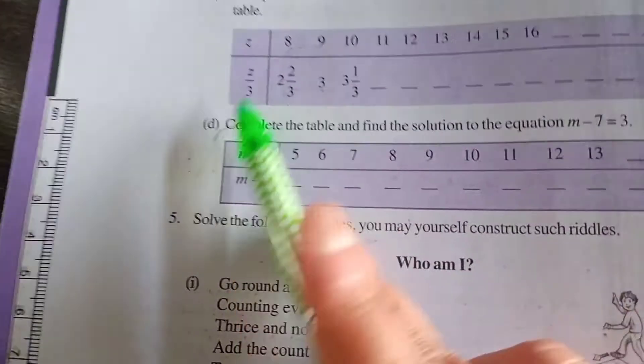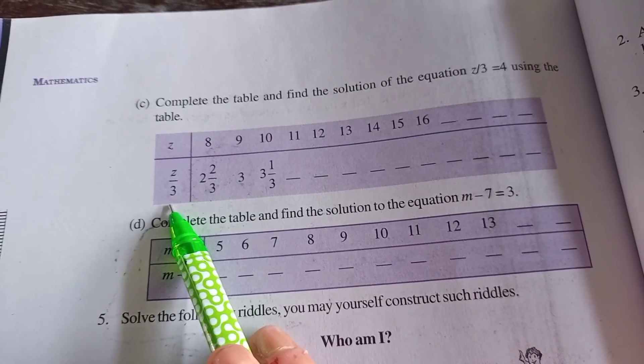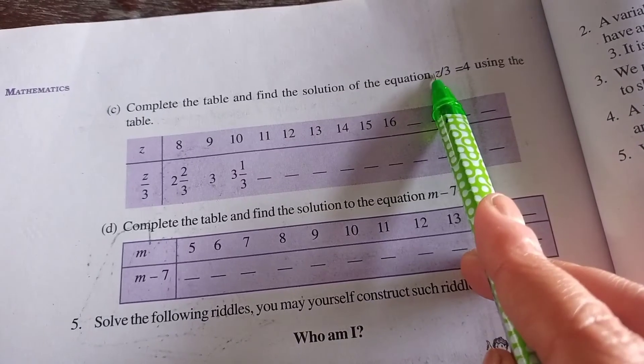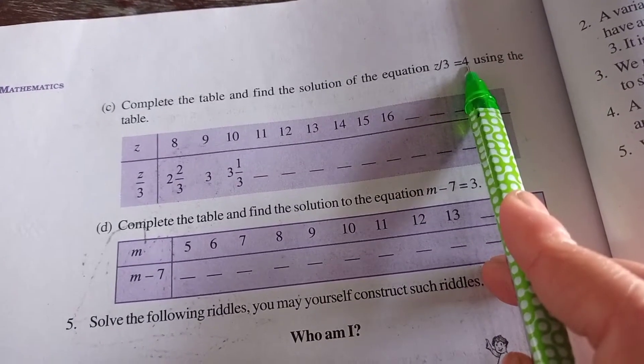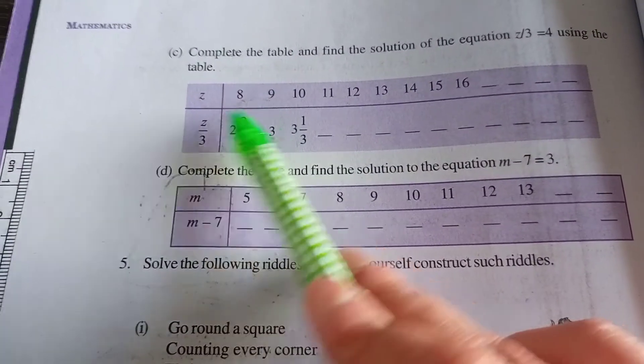We are moving ahead with part c. Here they are giving us division. We have to find: if we divide z by 3, we should get 4 as the answer. First time, if we divide 8 by 3, we get an improper fraction.